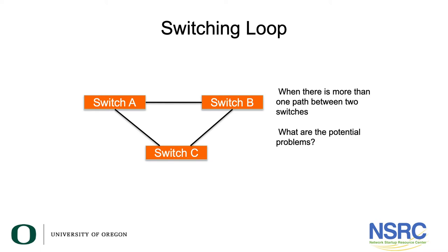In this diagram we have three switches: Switch A, Switch B, and Switch C. There is a loop — there are multiple ways to go around this ring. So the question is, knowing what you know about how switching works, when there's more than one path between two switches, what are the potential problems? Let's look at a couple.